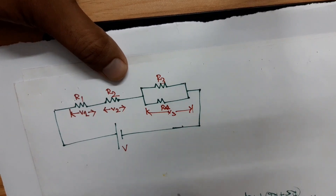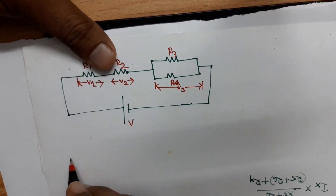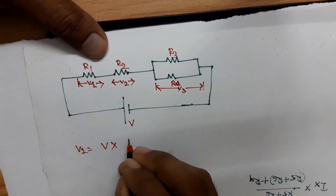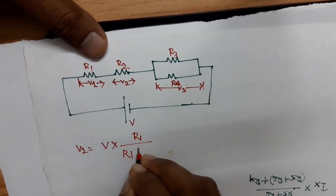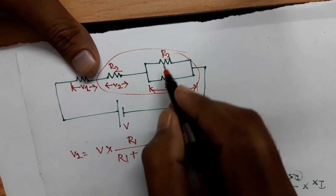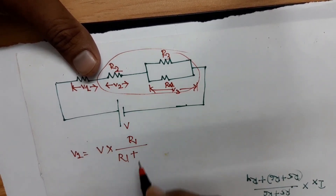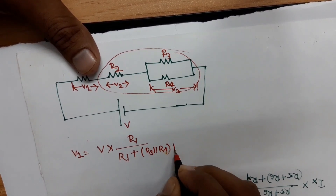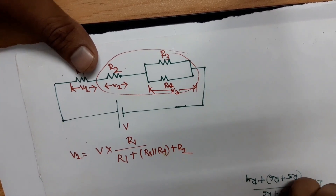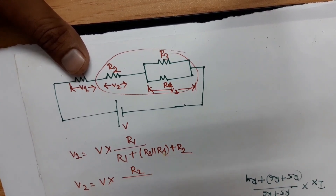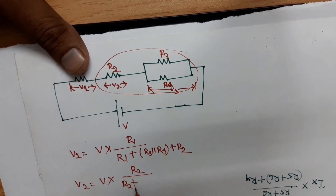To find V1: V1 equals V into R1, divided by R1 plus the total equivalent of the rest — which is R3 parallel with R4, plus R2. To find V2: V2 equals V into R2, divided by R2 plus R3 parallel with R4, plus R1.